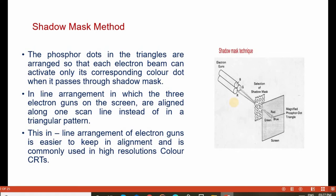The phosphor dots in the triangles are arranged so that each electron beam can activate only its corresponding color dot when passing through the shadow mask. In the in-line arrangement, the 3 electron beams on the screen are aligned along one scan line instead of the triangular pattern. This in-line arrangement is easier to keep in alignment and is commonly used in high resolution color CRTs.